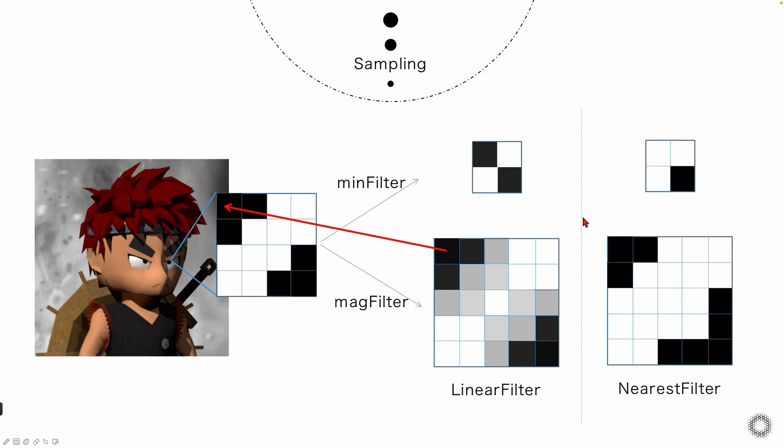Let's introduce another method, Linear Filter. Firstly, we also find the corresponding coordinate position at the original texture. But this time, we choose four surrounding pixels and get a weighted average of these four different colors. So for example, the first pixel, we have three black and one white. And the white pixel is at the furthest. So it has the smallest proportion. In this case, the first pixel will be a deep gray.